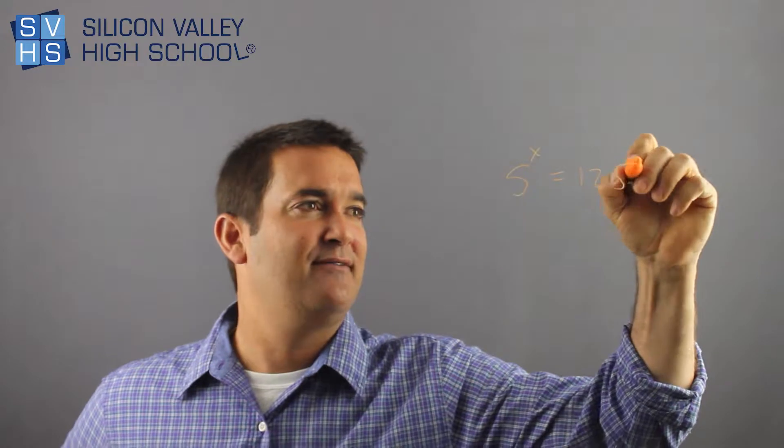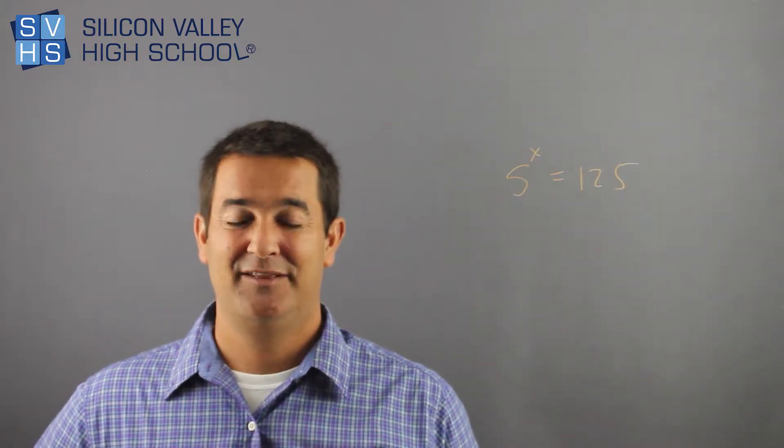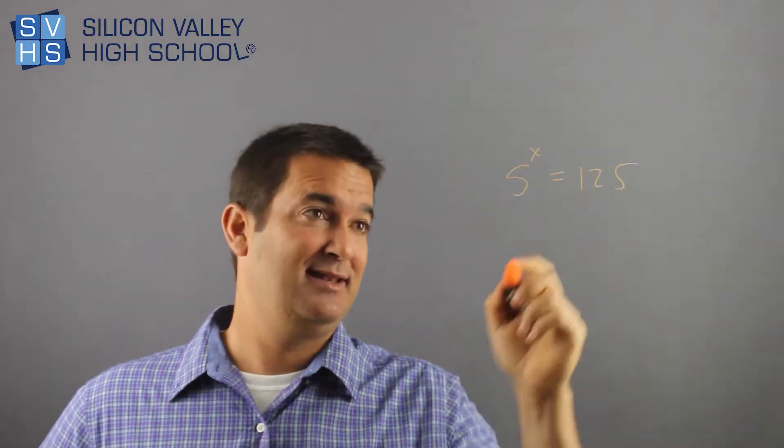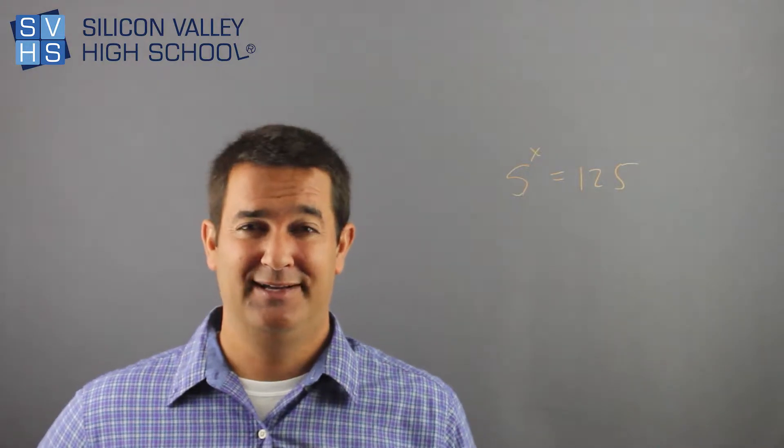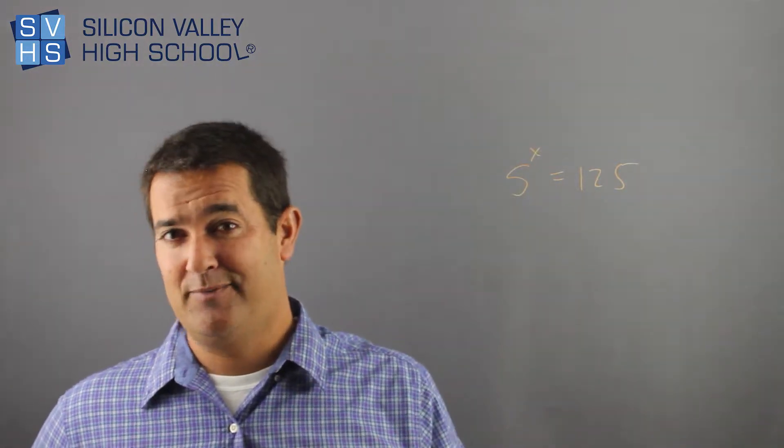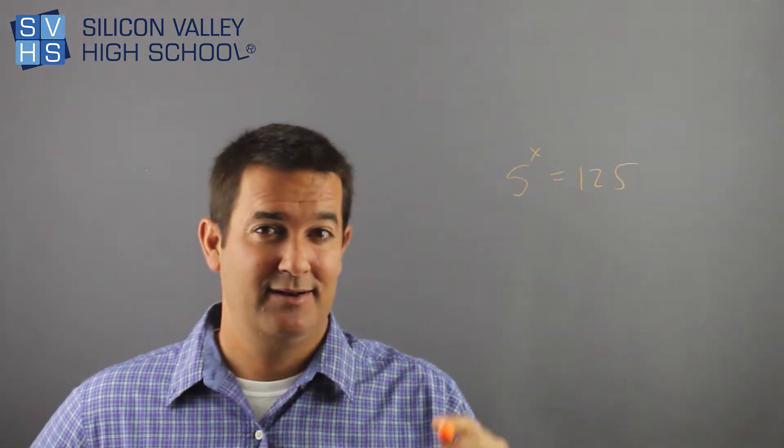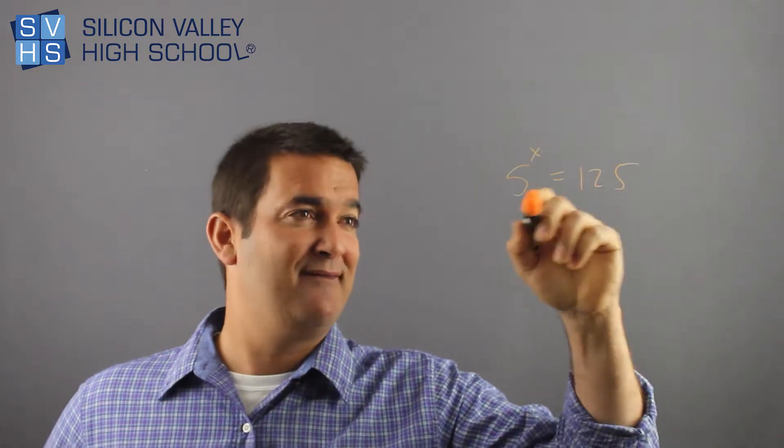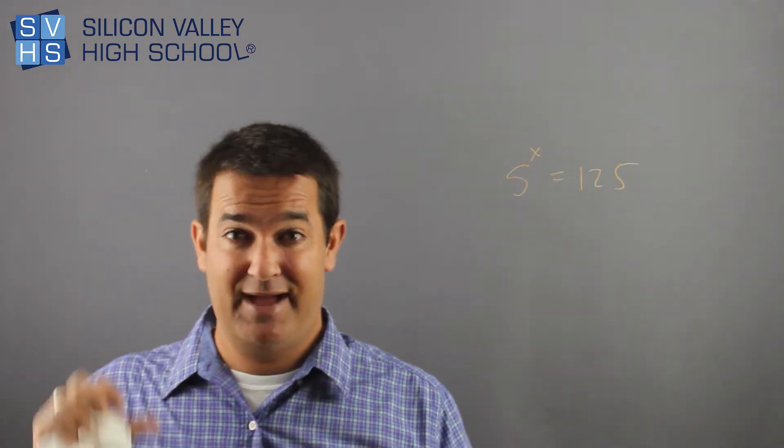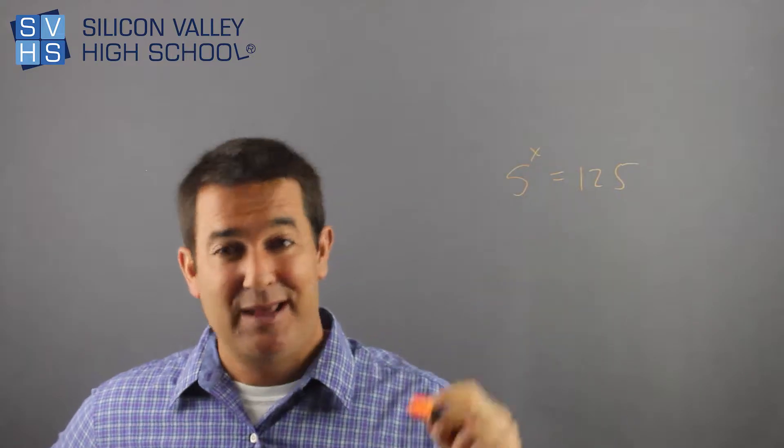Let me bring you some curveballs. What if I had 5^x = 125? Now you're like, the fun has ended. The bases don't match, so I guess this is a different kind of problem. It's totally not. The goal is still to have the bases match so the exponents can equal each other. You have to manipulate this now.